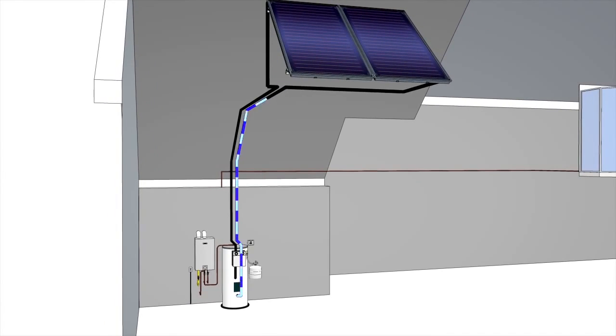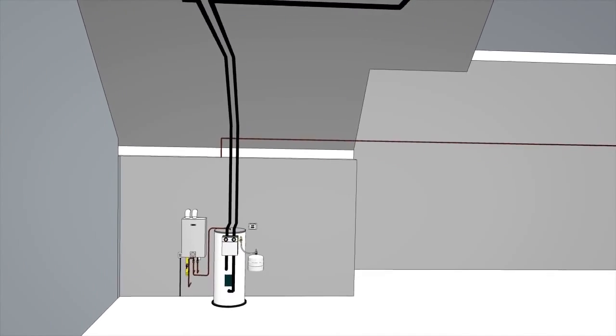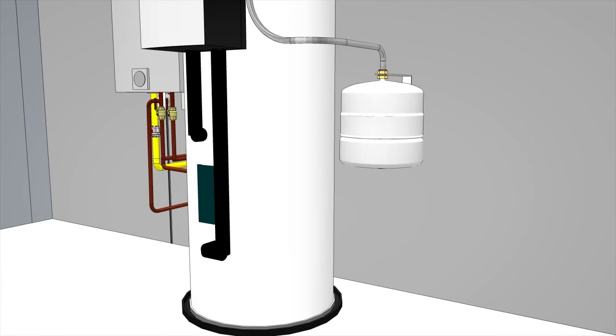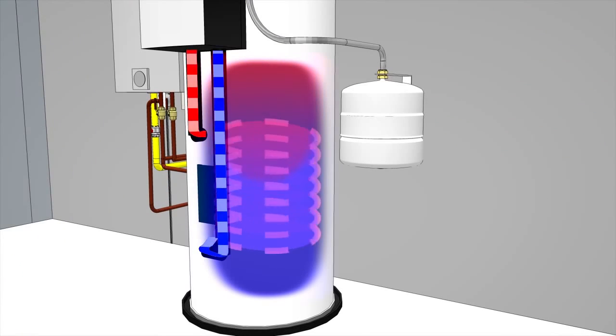The solar heated fluid is pumped down to a storage tank where it's circulated through a coil of pipe called a heat exchanger. This is how the heat is transferred from the solar heated fluid to your potable water.